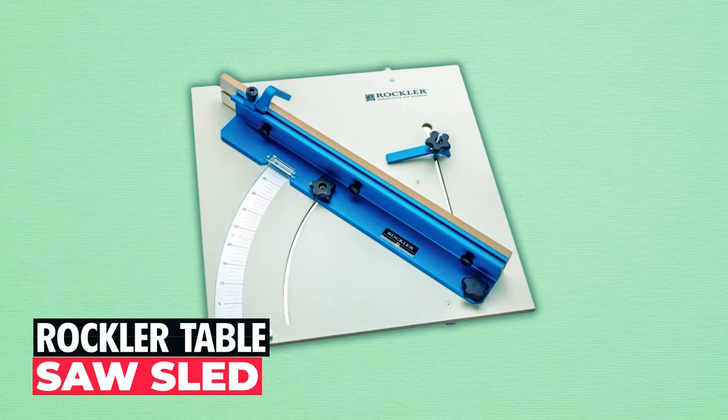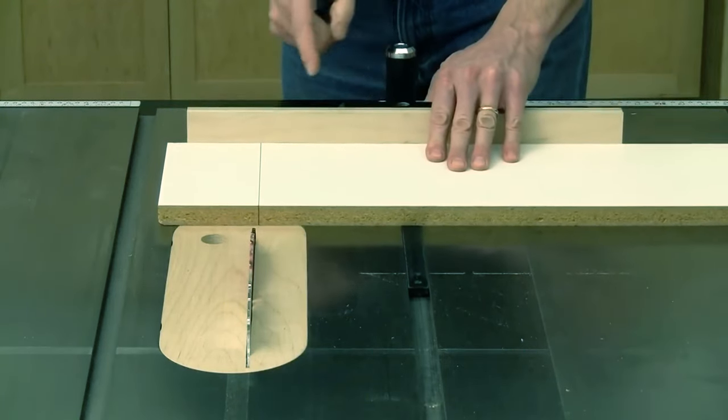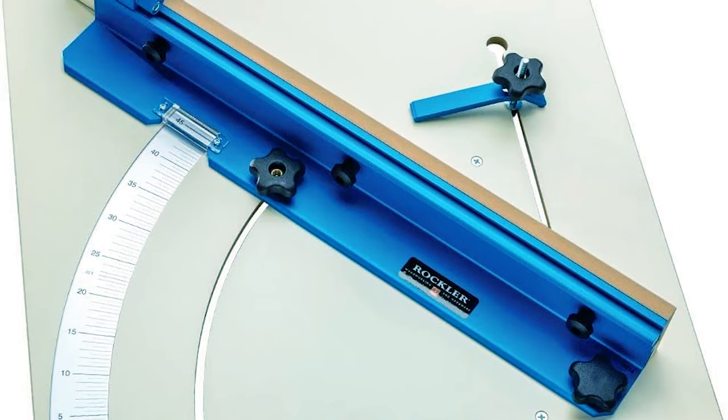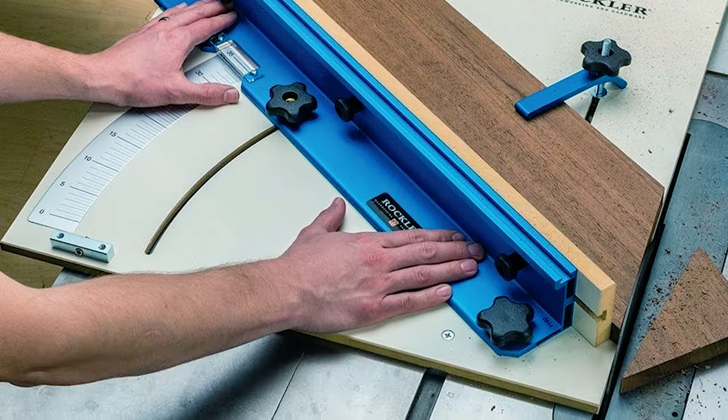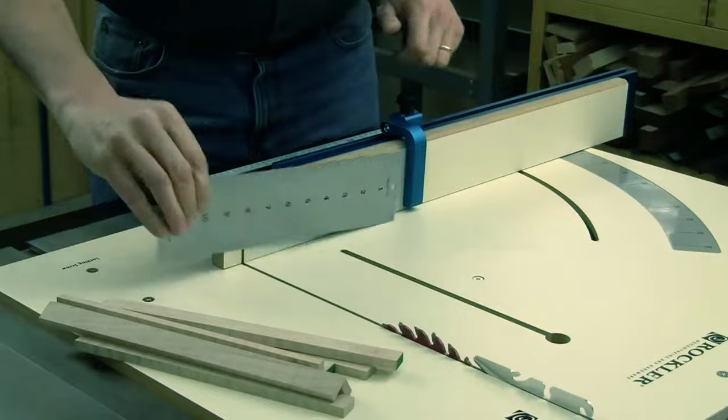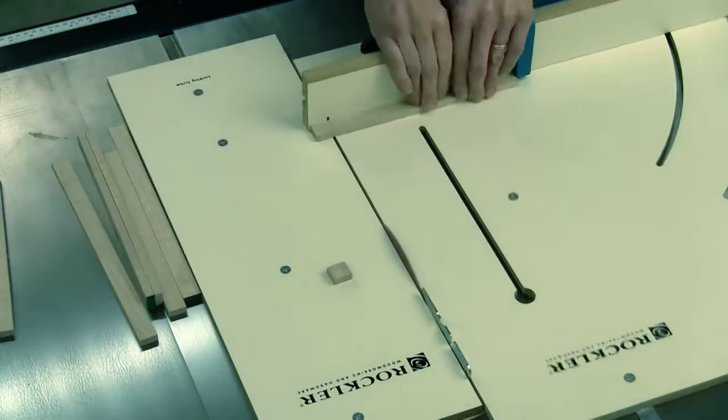Rockler Table Saw Sled. Elevate your woodworking precision with the Rockler Table Saw Small Parts Crosscut Sled. Crafted for small parts, this sled offers impeccable 90 degree angle cuts with little to no tear out, perfect for dowels, tenon stock, and small moldings. Thanks to the zero clearance support, you can say goodbye to pieces getting stuck or falling through the blade.